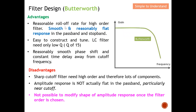Butterworth has a small, smooth, and reasonably flat response in the pass band and also stop band — there is no ripple at either. They are easy to construct and tune; LC filters only need a low Q of around 1.5. It has a reasonably smooth phase shift and also constant time delay away from the cutoff frequency.